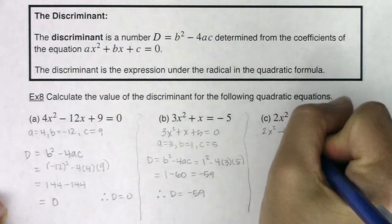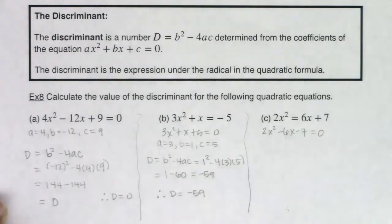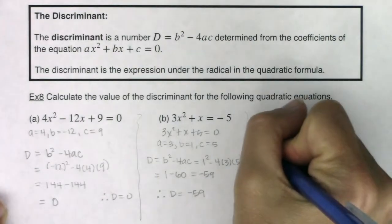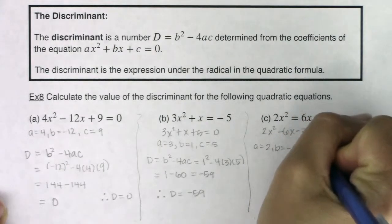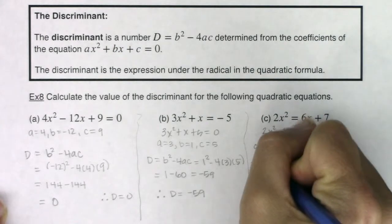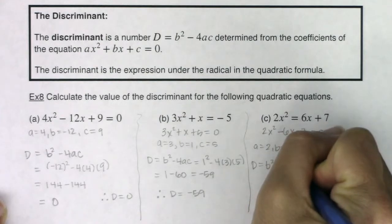minus 6x minus 7 is equal to 0. And then here this would give me a was 2, b was negative 6 and c was negative 7. So my discriminant is always b squared minus 4ac.